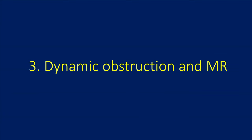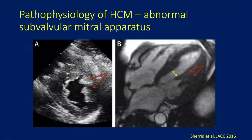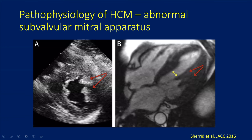Next we're going to spend some time talking about dynamic obstruction and MR. In HCM, there are significant abnormalities in the intrinsic mitral valve as well as the mitral valve apparatus. Here is a short-axis echo at the mitral valve level demonstrating abnormalities of the mitral valve subvalvular apparatus. In HCM, the papillary muscles can often be bifid — having two heads — and can often be anteriorly displaced, meaning they move closer to the ventricular septum. Sometimes there's abnormal insertion directly into the mitral valve. When the papillary muscles are anteriorly displaced, it brings the entire mitral valve apparatus closer to the septum and to the LVOT, increasing the predisposition for LVOT obstruction.